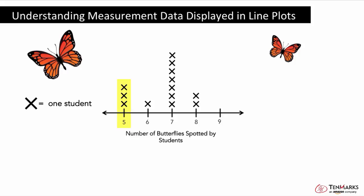Let's take a look at this column. The 5 represents 5 butterflies spotted. We can count the X's to find how many people spotted 5 butterflies: 1, 2, 3. Three students spotted 5 butterflies.